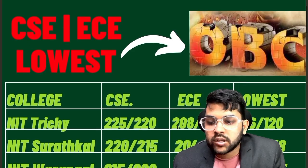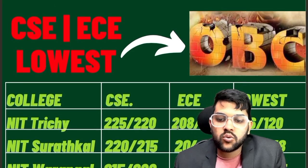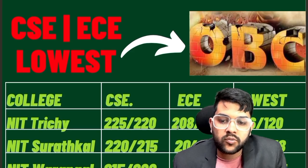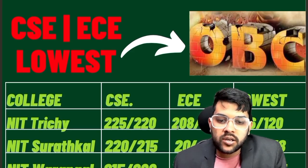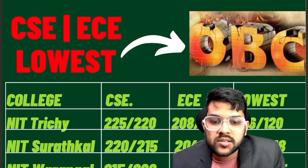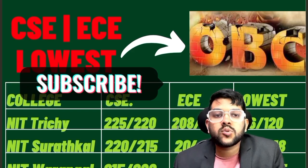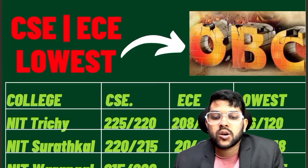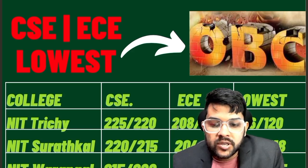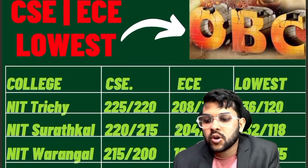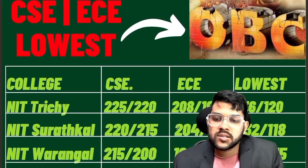For NIT Surat: 220 and 215 marks for CSE, for EC 204 and 105, and for lowest it is 132 and 118 marks. These are again for moderate paper and for first attempt. If you are looking for second attempt or the paper will be easier or harder, a little bit change will be there.